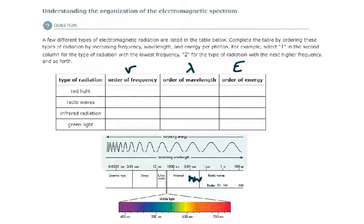And so I know that the higher the energy, the higher the frequency. So I just need to determine which type of radiation here is highest energy. So it's between red light, green light, radio waves, and infrared radiation.